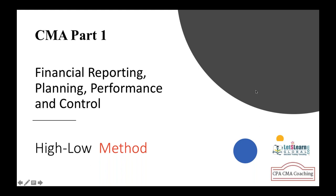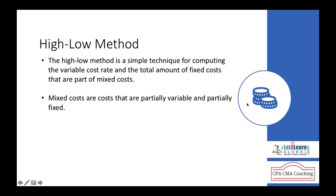In this session, we will discuss the high-low method, which is used to find the fixed and variable costs from the total costs given at different activity levels. This technique is used to find out what is the fixed cost and what is the variable cost at a given activity level.